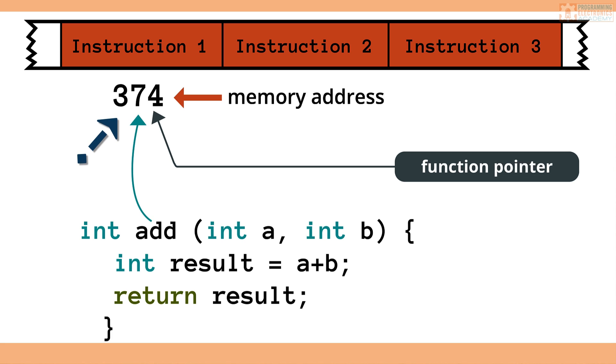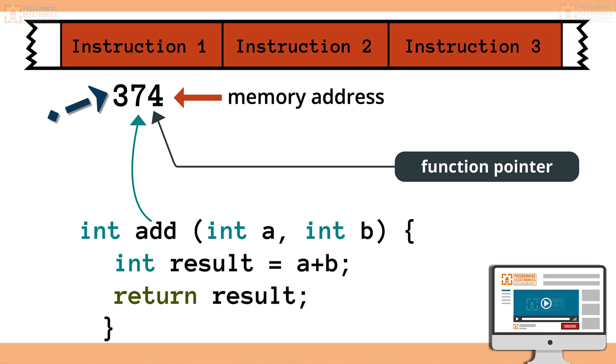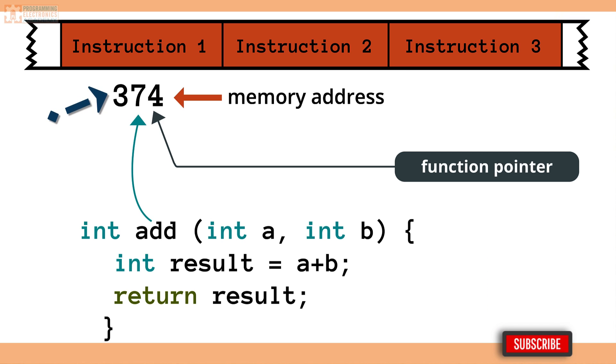When you create a function, the instructions for that function are saved in memory. The first instruction, like all the instructions, will have an address. That first address is what we will store in a function pointer. So a function pointer is going to be a variable that holds the memory address of function instructions.